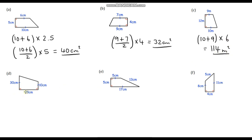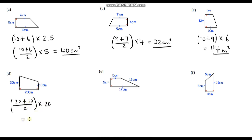Okay, question D. This time our trapezium has been rotated, so these are our parallel sides. If we add those together: 30 plus 10, then divide by 2 and multiply by our height which is 20. That gives us 40, divided by 2 is 20, and 20 times 20 is 400 centimetres squared.